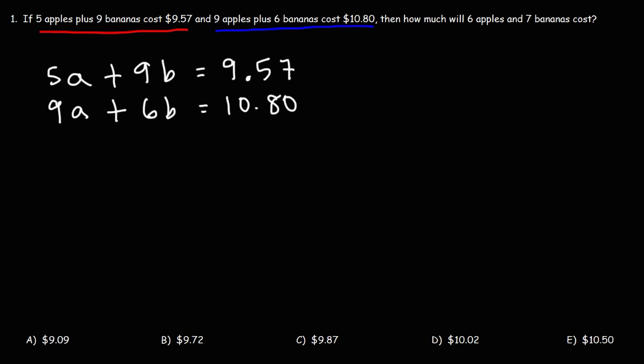So how do we calculate the values of A and B in this equation? We're going to use a process known as elimination. We need to decide if we want to cancel A or B. Let's focus on B. Now what we can do is multiply each equation by some number such that when we add the two equations, the B variables will cancel.